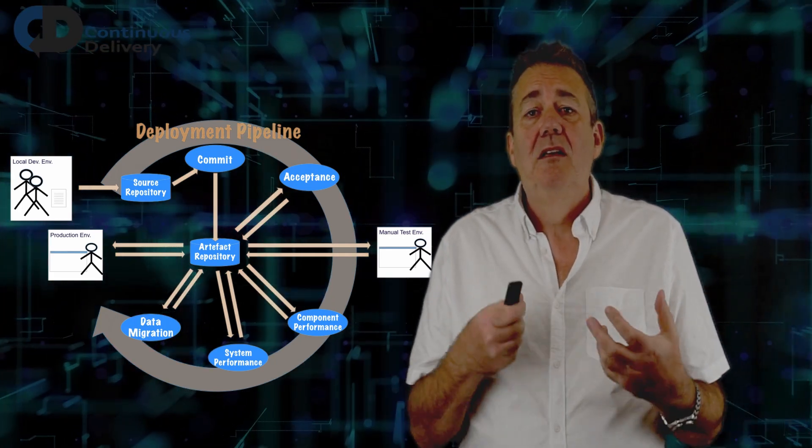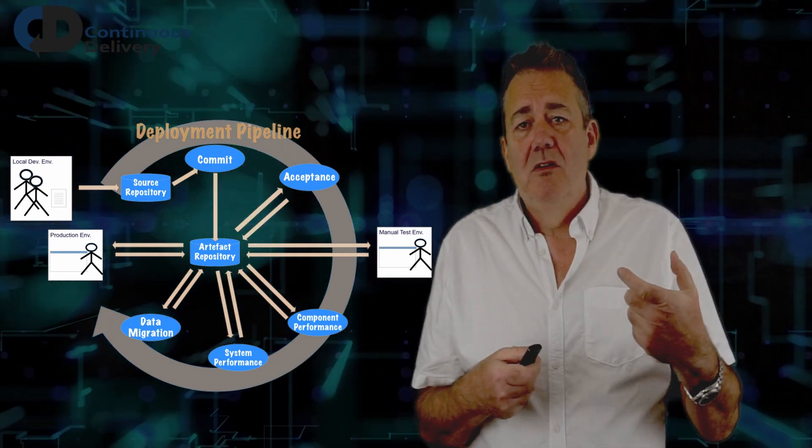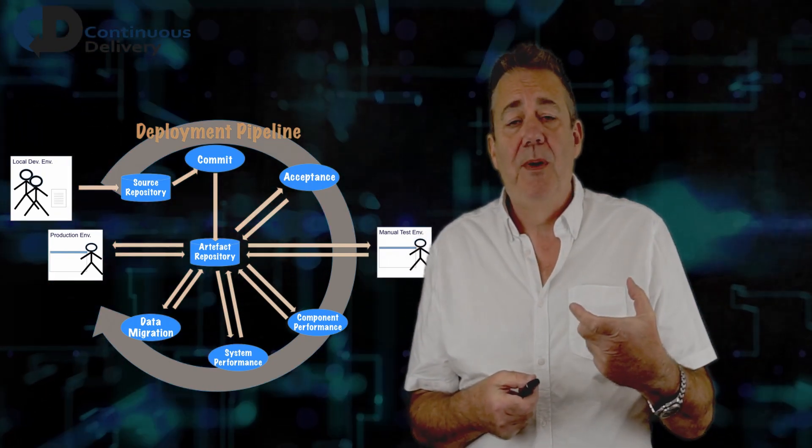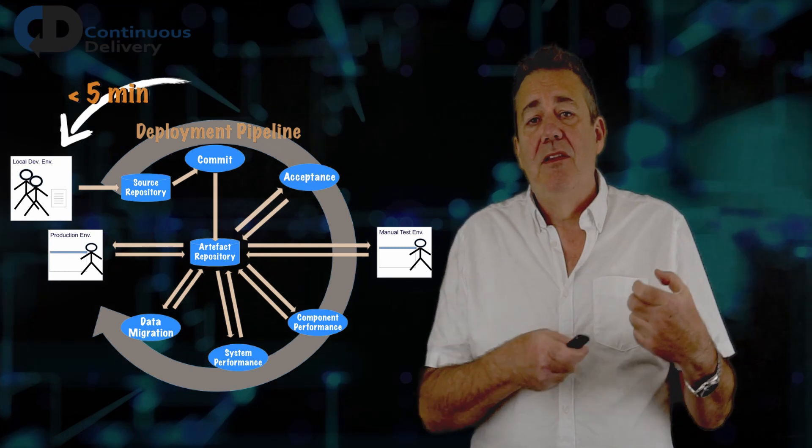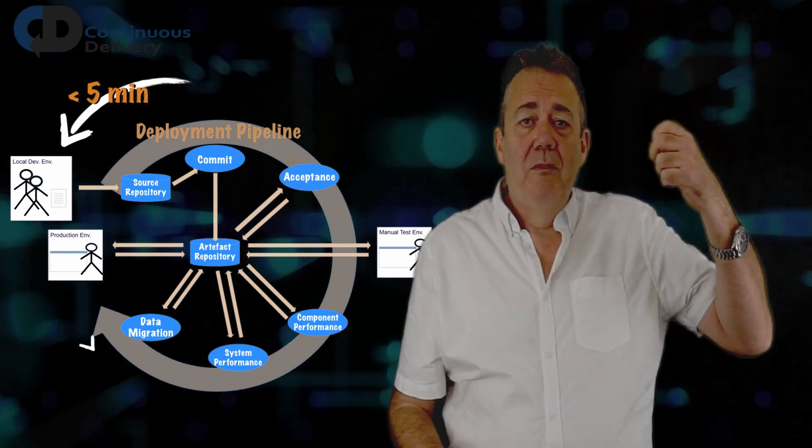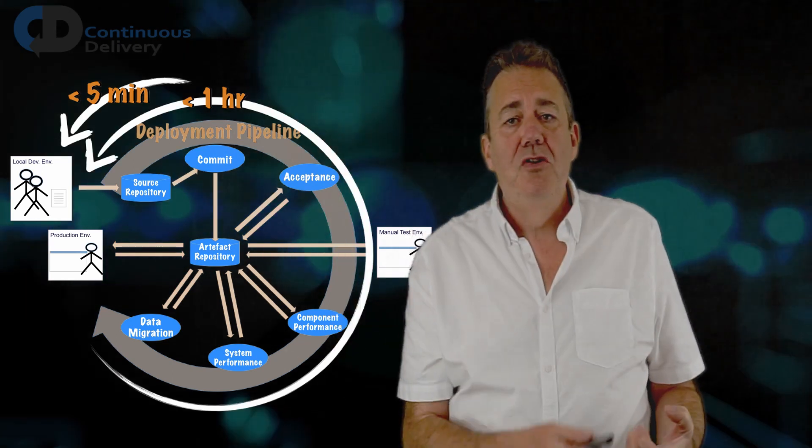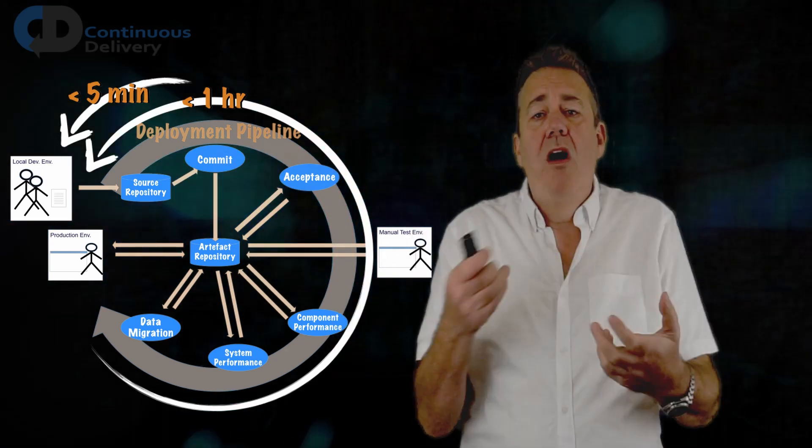We still need all of these things to be fast. In general, I recommend that you should be optimizing your deployment pipeline so the fast cycle completes in under five minutes. And the whole cycle from commit to releasable thing completes in under an hour. Now, why those numbers? Why those two numbers?